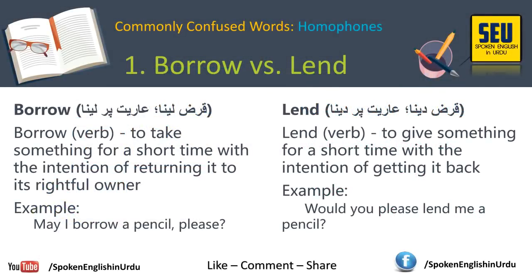پہلا word ہے borrow vs lend۔ انہیں homophones بھی کہتے ہیں کیونکہ ان کی آواز ایک جیسی ہوتی ہے لیکن دونوں کا معنی مختلف ہوتا ہے۔ البتہ یہ پہلا word confusing word ہے، homophones نہیں، جبکہ آگے آنے والے چار words homophones بھی ہیں۔ Borrow کا مطلب ہے قرض لینا اور lend کا مطلب ہے قرض دینا۔